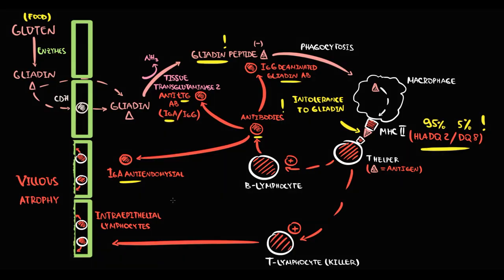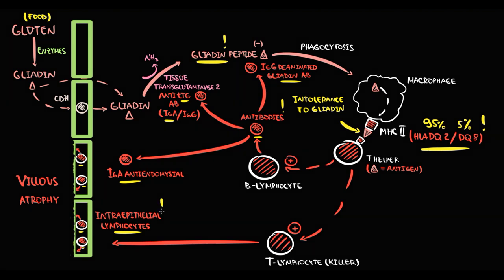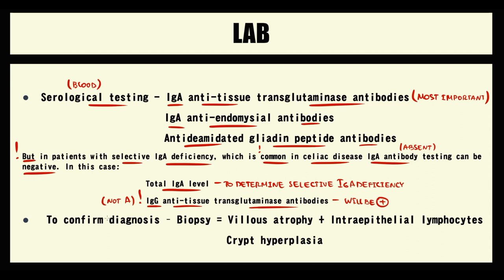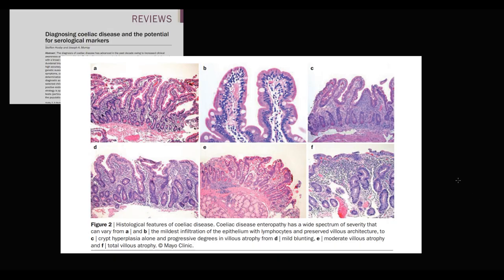The immune system also stimulates T-lymphocytes that invade the intestinal epithelium and destroy its superficial layer. In the mucous membrane, intraepithelial lymphocytes cause villus atrophy. To identify these features, we perform duodenal biopsy, which is the most precise diagnostic method for celiac disease. With biopsy, we can find villus atrophy, intraepithelial lymphocytes, and crypt hyperplasia.